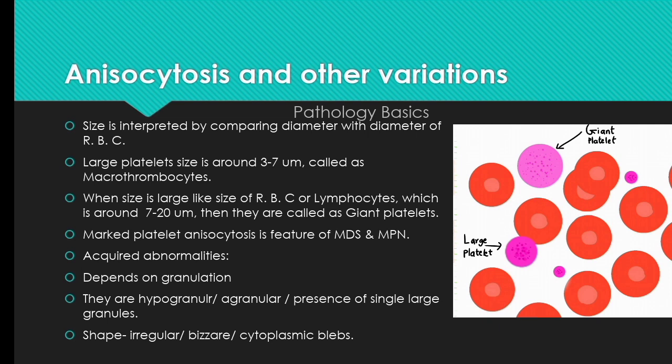Acquired abnormalities of the platelet depend on granulation and shape variation. The granulation abnormalities are usually hypogranular platelets, agranular platelets, or the presence of a single large granule. Shape abnormalities include irregular bizarre forms and platelets with cytoplasmic blebs.